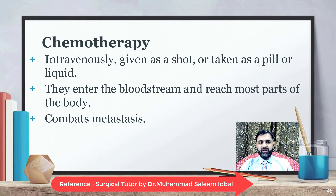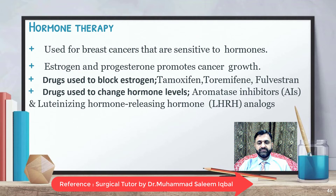Chemotherapy is given intravenously, as a shot, or taken as a pill or liquid; it enters the bloodstream and reaches most parts of the body to combat metastasis. Hormone therapy is used for breast cancers sensitive to hormones — often called ER-positive and PR-positive cancers, in which estrogen and progesterone promote cancer growth. Drugs used to block estrogens include tamoxifen, toremifene, and fulvestrant. Drugs used to change hormone levels include aromatase inhibitors and luteinizing hormone-releasing hormone analogues.